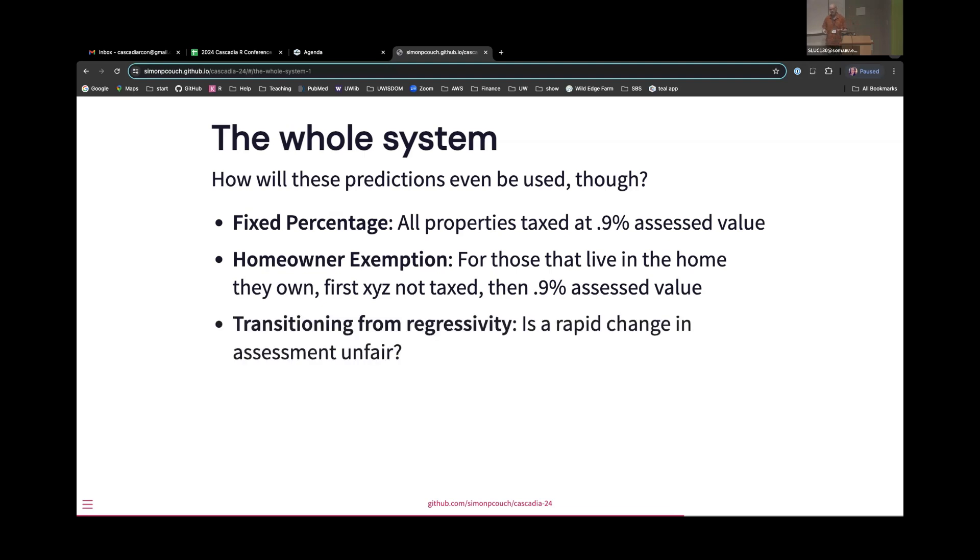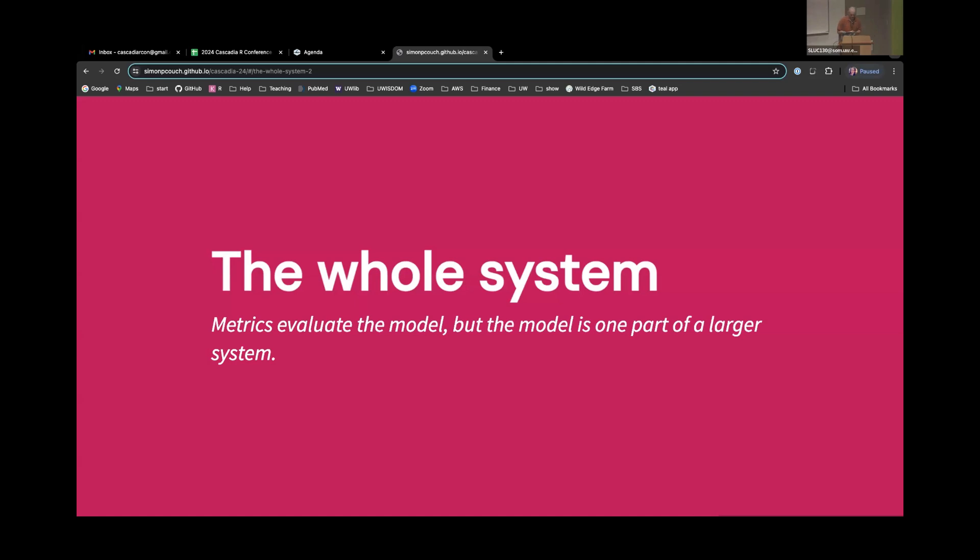Another thing that might impact our sort of gut reaction to what is actually fair is the change in the value from last year. So if I own a $500,000 house, and this assessment from the previous year was $200,000 under, and now my prediction is accurate, and I'm paying $2,000 or $3,000 more than I expected to, is that change in the amount that I'm paying unfair? And so we even need to think about what that model looked like last year if we want to train a fair model. And so I've tried to argue here that the metrics evaluate the model, but the model is one part of a larger system, and that larger system is just as important to us in aligning the way that we talk about evaluating machine learning models with our actual morally held beliefs.